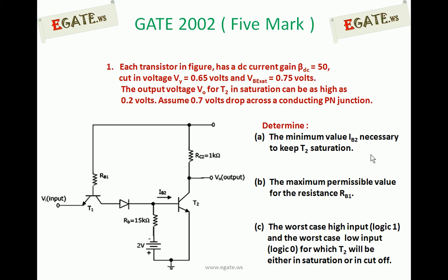Determine: A - the minimum value IB2 necessary to keep T2 in saturation; B - the maximum permissible value for the resistor RB1; C - the worst case high input and worst case low input voltages for which transistor T2 will be either in saturation or in cut-off. Since it is a FIMA question, there will be no options for this one.